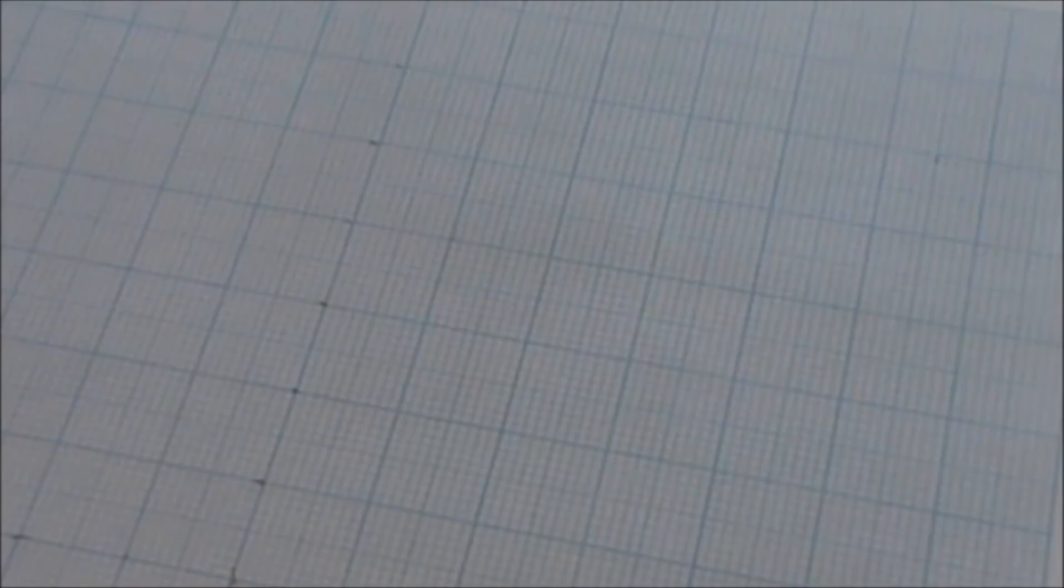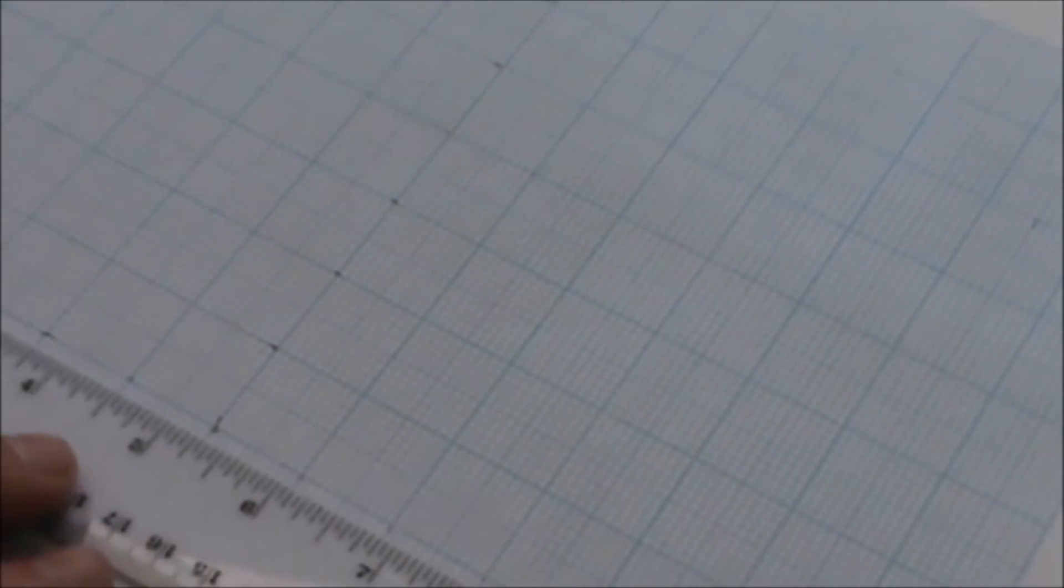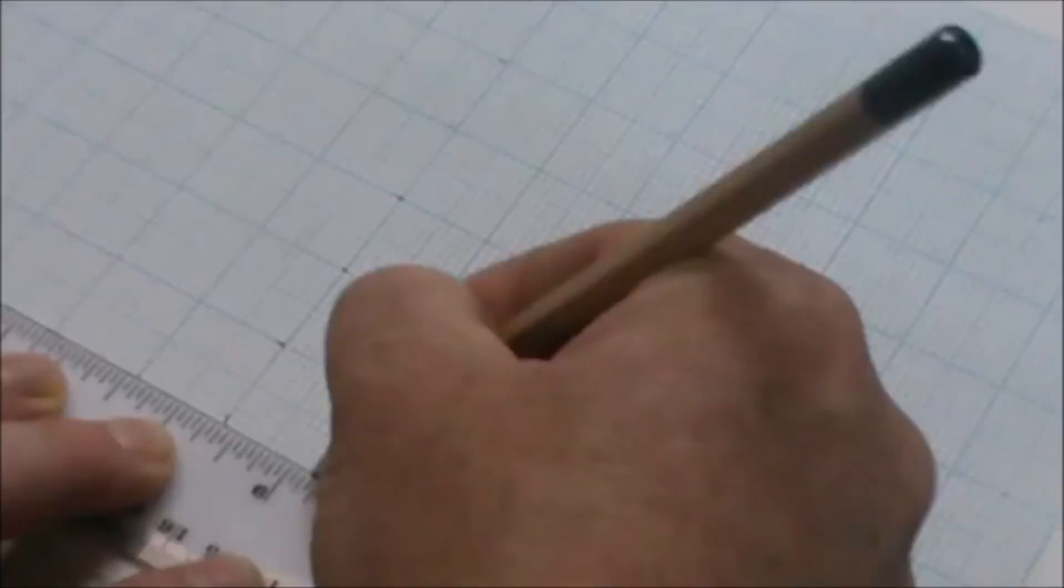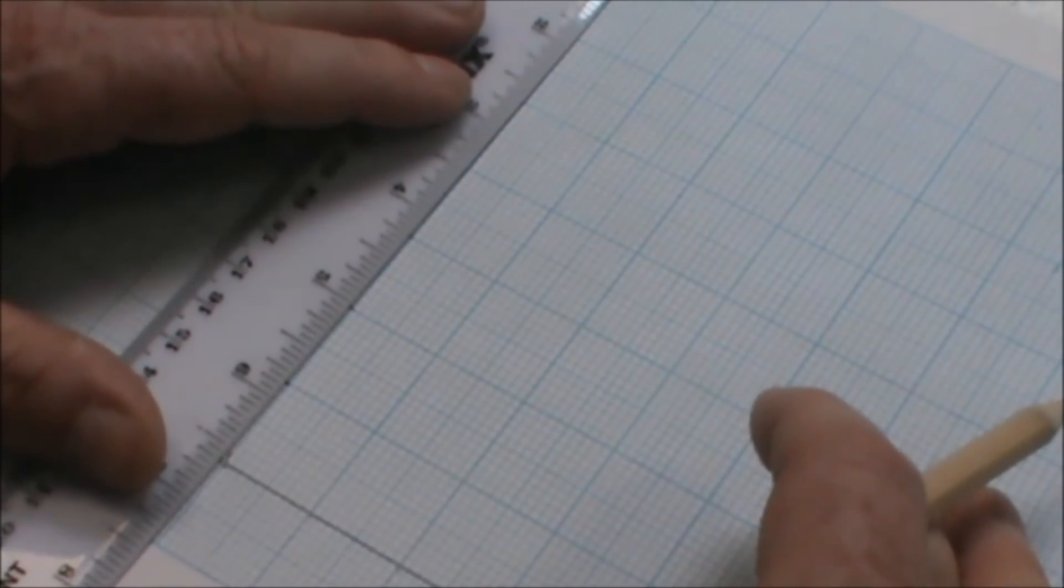We can now draw our axes. Remember, voltage along the bottom and current on the Y axis. Notice I've drawn this as a T shape. We'll now label up the axes.